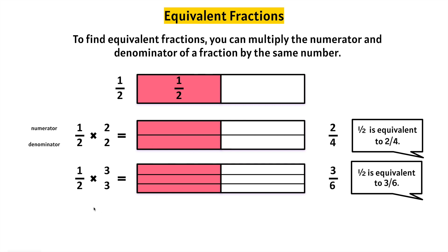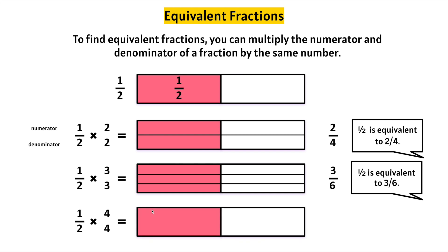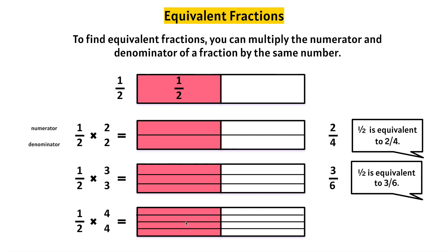Let's try one more — half times four for the numerator and the denominator. Let's create a visual. We have a half, and let's make four times as many numerators and denominators. One, two, three, four. Let's count them all: one, two, three, four, five, six, seven, eight. The denominator will be eight.